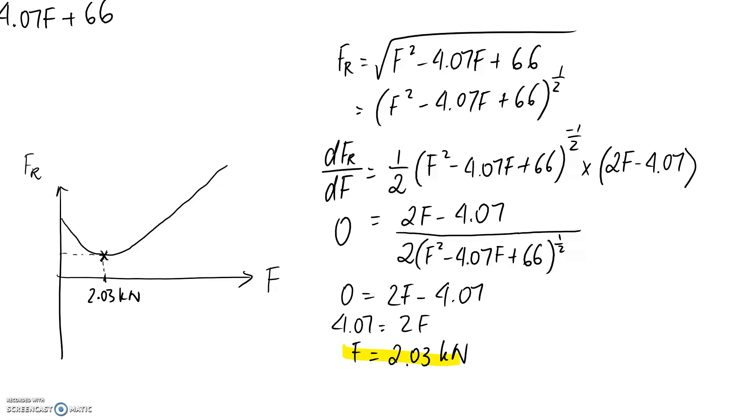The other one that we needed to provide was what the corresponding resultant force actually is. And this is pretty easy now that we know the f value, so where it lies on the x-axis. We can find this just by plugging it back into our original equation. So, fR is going to be the square root of when f is 2.03. This can be replaced with 2.03. And this works out to be about 7.87 kilonewtons.